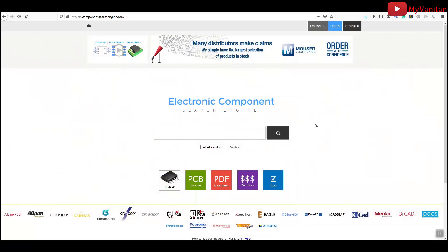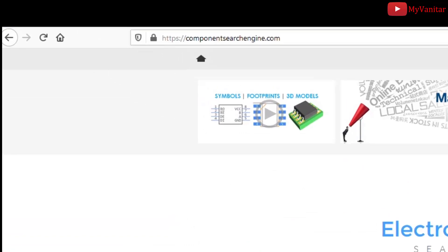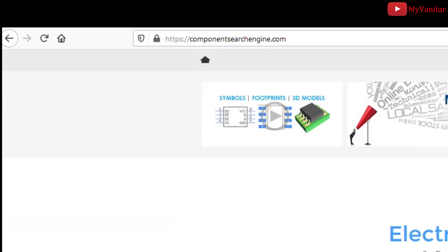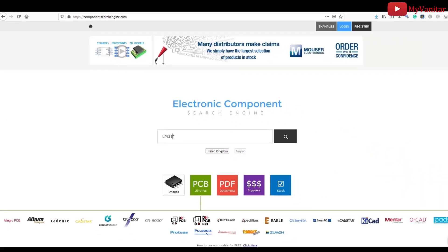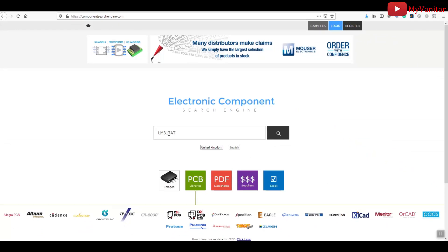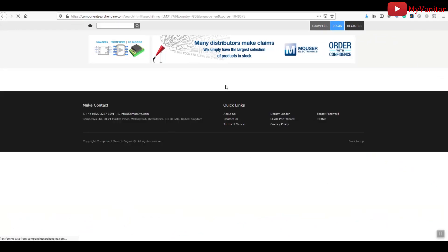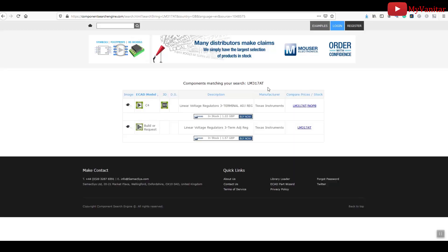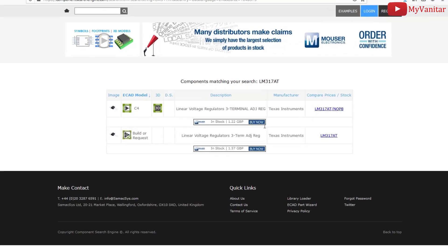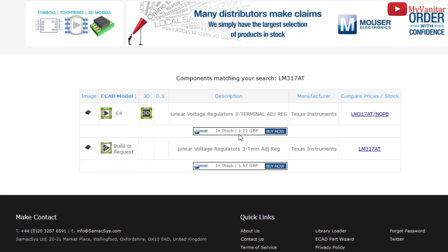If you want to buy original components or check their prices, you can simply visit componentsearchengine.com and type the component name here, for example LM317. Wait for the results.